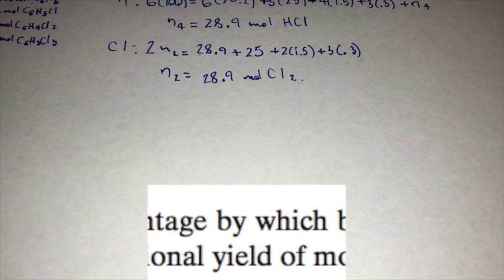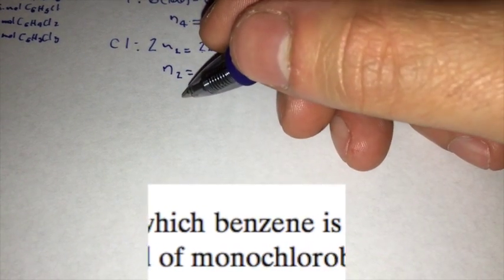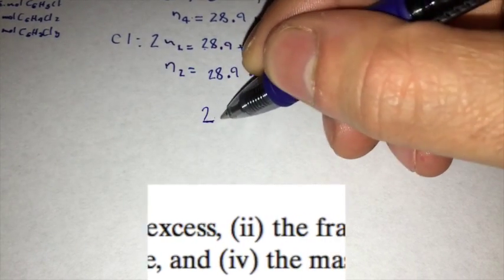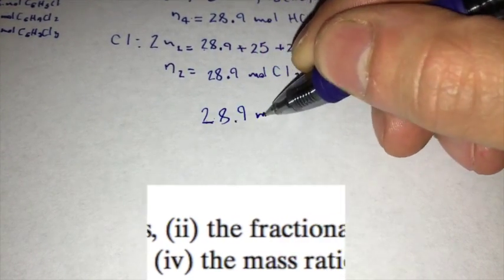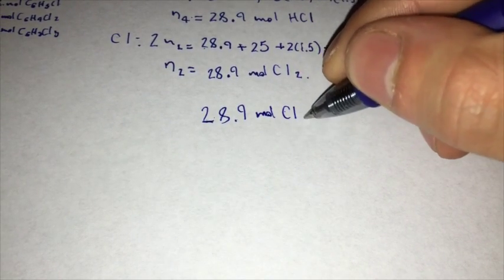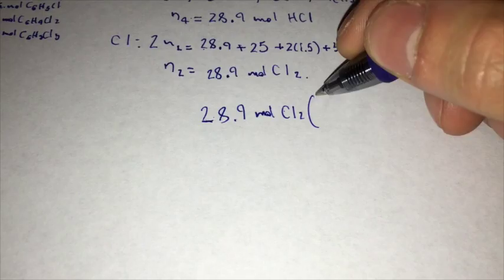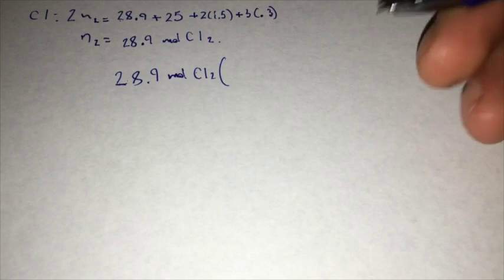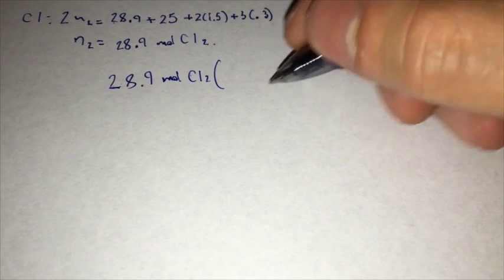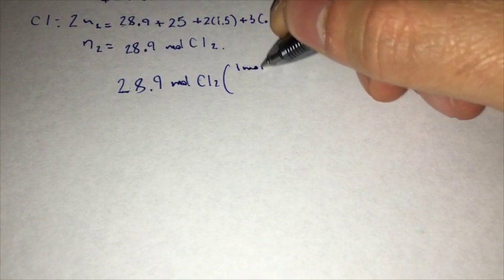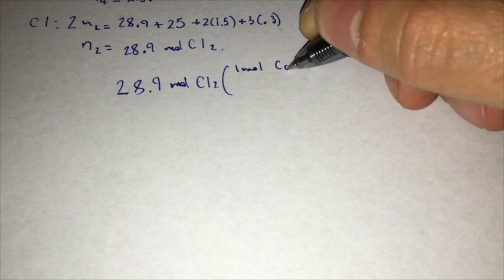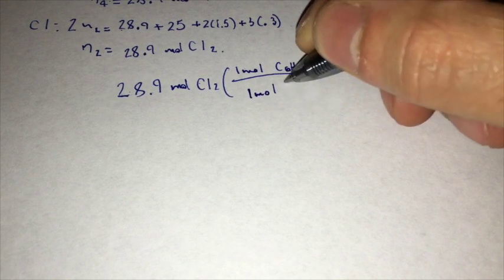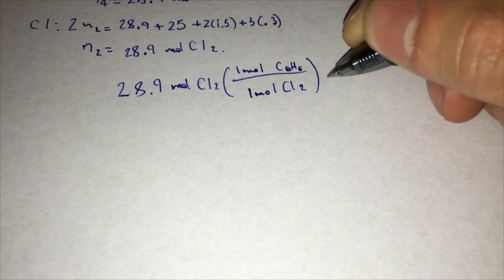And in order to do that, we first need to get the excess benzene, which would be equal to 28.9 moles of Cl2 times the stoichiometric ratio of Cl2 and benzene, which equals 28.9 moles of C6H6.